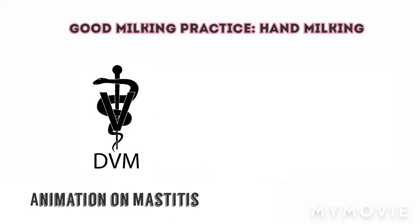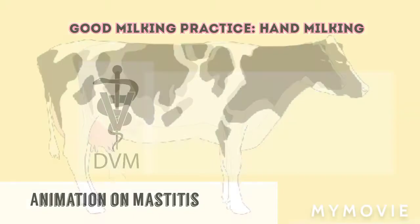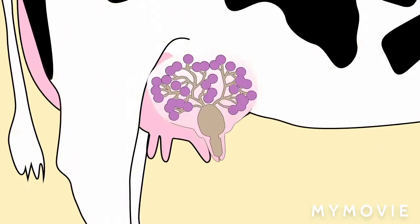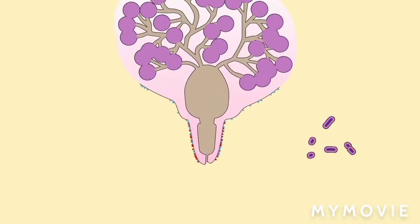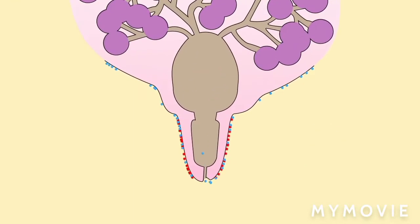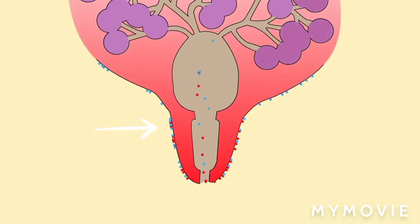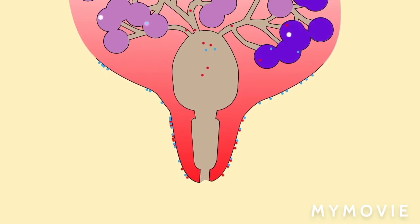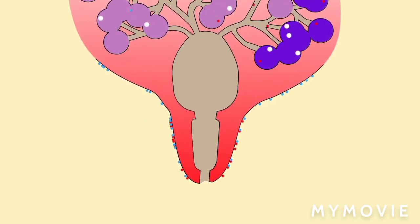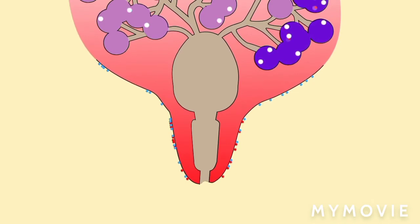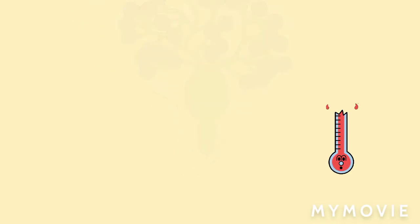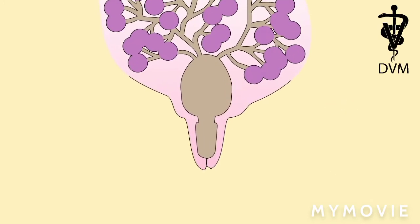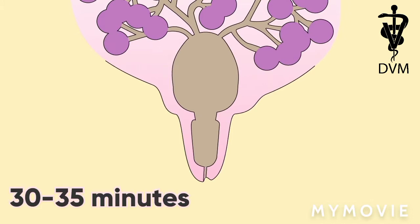An animation on mastitis. Mastitis is an infection of the milk-producing gland. Bacteria invades the teat via the teat canal and causes infection. Mastitis is a fight between bacteria invading the udder and the cow fighting the infection. The teat is an important barrier for stopping bacteria getting into the udder.